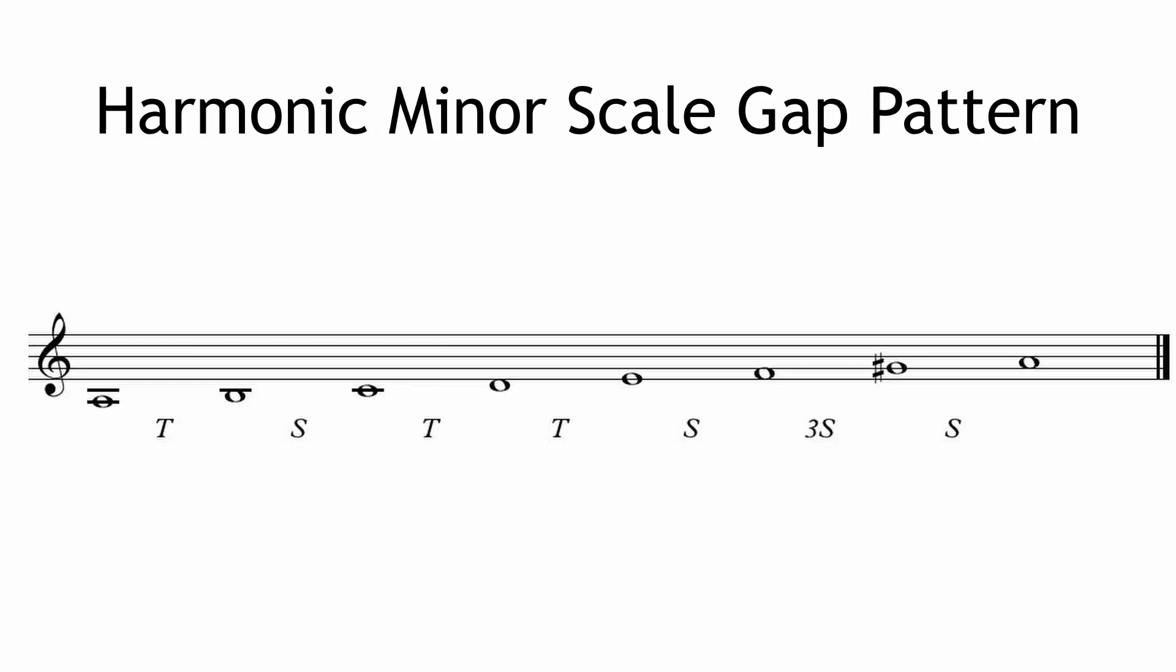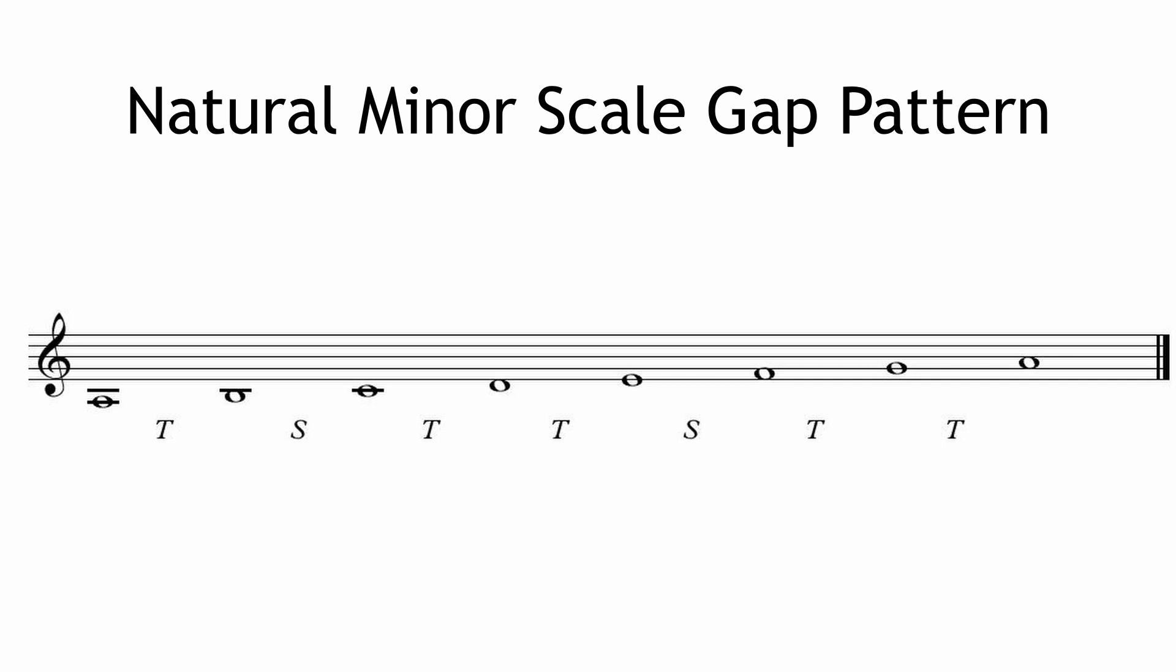Well what about minor scales? More than likely it's going to be the harmonic minor which means a raised seventh which means a gap of three semitones at the top of the scale between the submediant and leading note of the scale. Here's C's relative harmonic minor, A harmonic minor. It goes tone semitone tone tone semitone three semitones semitone. Here are the other minor scale patterns.